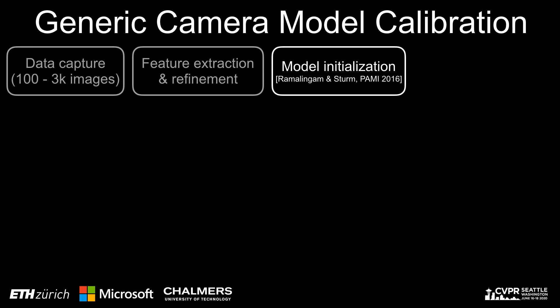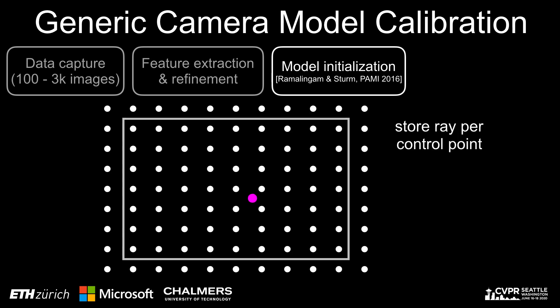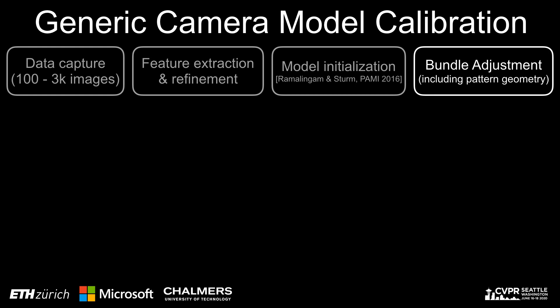We initialize the parameters for either a central or a non-central model using the approach from Ramaling-Nome and Stohr. Rather than modeling each pixel, we use a set of control points. For each control point, we store a ray or line and use interpolation on B-spline surfaces to obtain the rays for the remaining pixels. Finally, we use bundle adjustment to refine the camera model as well as the pattern geometry to account for non-planarities.